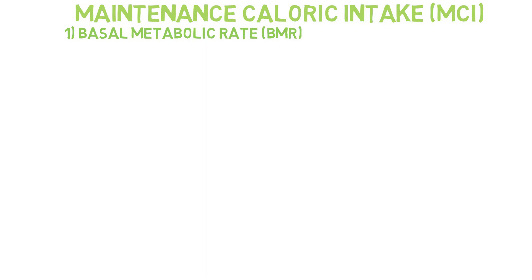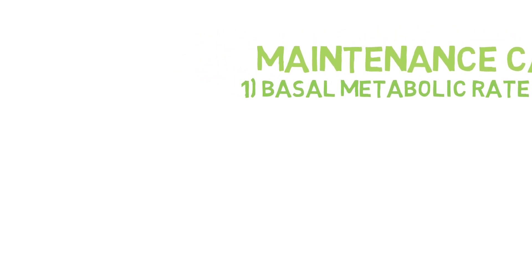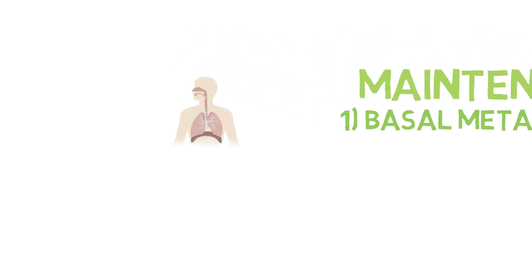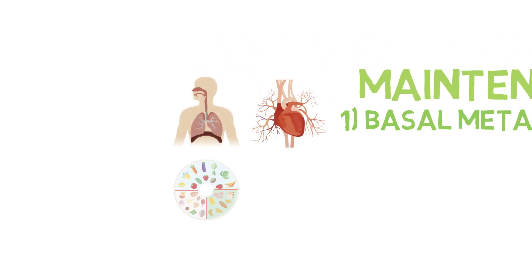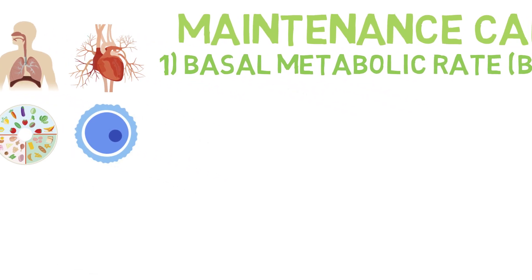Your BMR is the number of calories your body needs per day to accomplish its most life-sustaining functions, such as breathing, circulation, nutrient processing and cell production. We can calculate this by using the Mifflin-Saint-Geor equation.